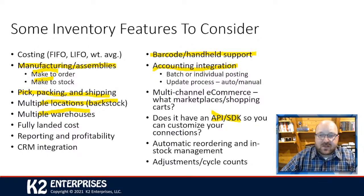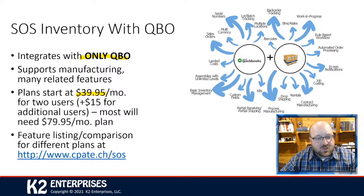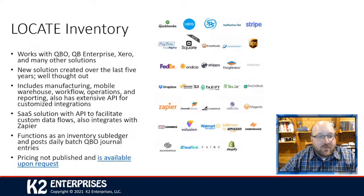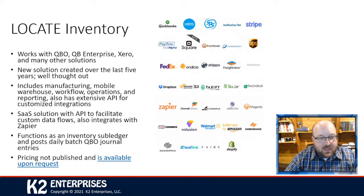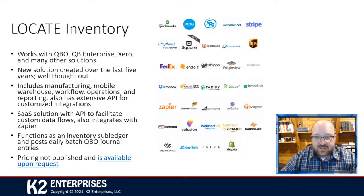There's SOS Inventory — be aware it only works with QuickBooks Online, starts at $39.95 a month for two users, though most folks end up at the $80 price point. There's the Locate package, which works with QuickBooks Online, QuickBooks Enterprise, Xero, and others. It's offered in a SaaS-based environment, has an API to allow customers to create their own workflows, and integrates with Zapier for flexibility.